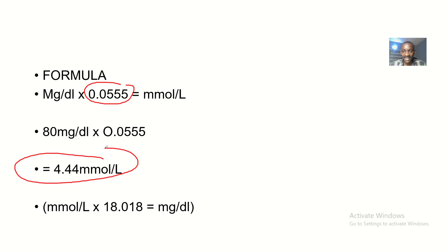Now, the vice versa: If you want to convert this 4.4 millimoles per liter to milligrams per deciliter, you simply multiply by 18.018.